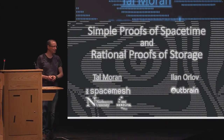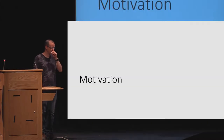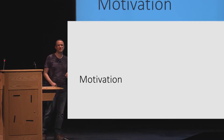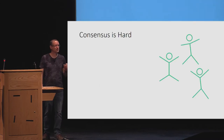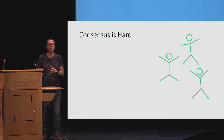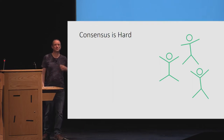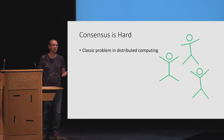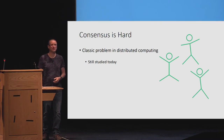Hi everyone. Let's start with a little bit of motivation, even though you've already seen some in the previous talk. Our story is we're trying to get consensus, doing some kind of agreement protocol, and getting consensus is hard. This is something that we've studied for many, many years, and it's still studied today in the context of blockchains and other contexts.